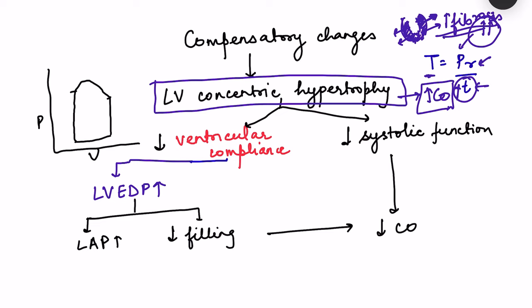Two consequences follow from this fibrosis. First, there is a decrease in ventricular compliance — the muscle fails to relax completely, causing diastolic dysfunction. With decreased compliance, the same ventricular filling produces an increase in left ventricular end-diastolic pressure (LVEDP). This is reflected in the pressure-volume loop where filling pressure rises, the mitral valve closes early, and ventricular filling decreases.